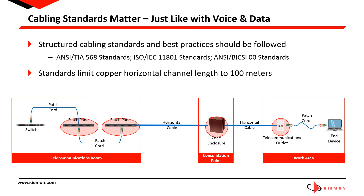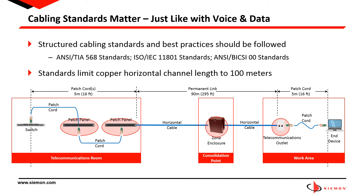The maximum length of the permanently installed or permanent link cabling is limited to 90 meters or 295 feet. This allows up to 10 meters or 33 feet of total cordage for an overall channel length of 100 meters or 328 feet. In conjunction with length, up to four connection points are allowed.